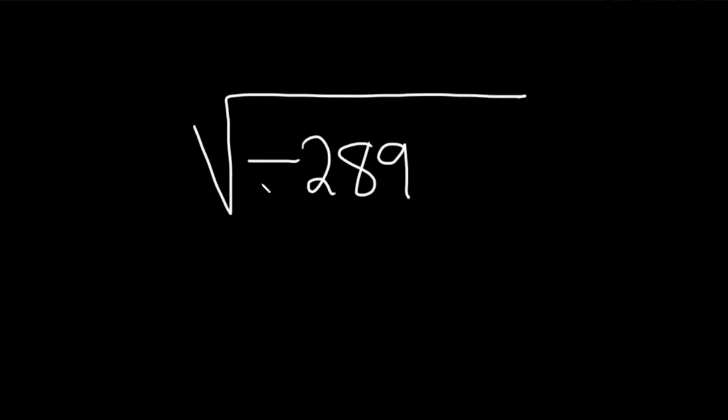So whenever you have a negative in the root like this, it automatically becomes an i. And then we still have the square root of 289.